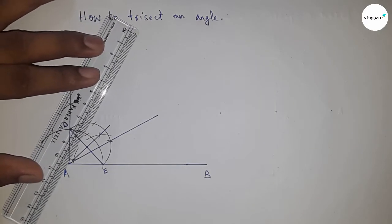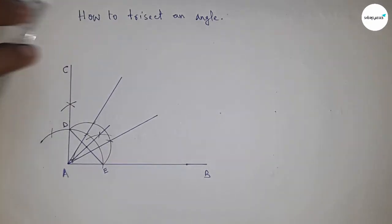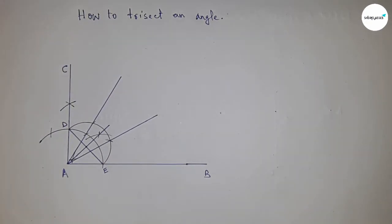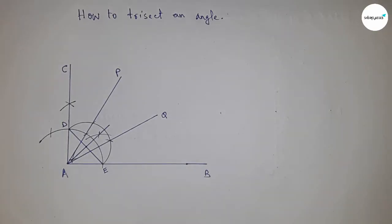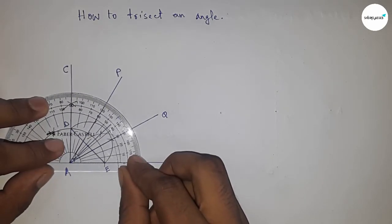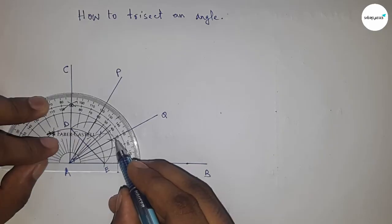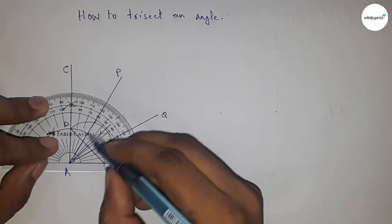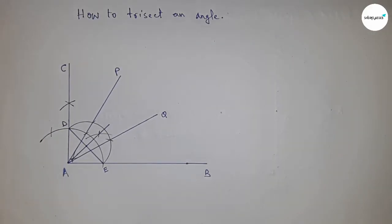Joining this one and marking the names of the angles — PQ. Checking whether it is correct: this is 90 degrees, this is 30 degrees — perfect — and this is 60 degrees — perfectly correct.